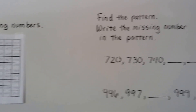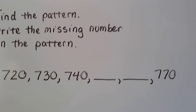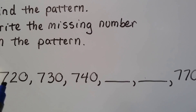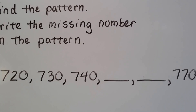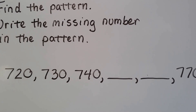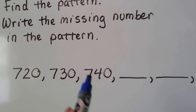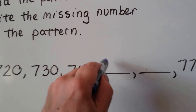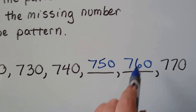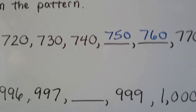Now these are going to be a little different — let's find the pattern and write the missing numbers. Can you tell what the missing numbers are? The hundreds are all staying the same: 700, 700, 700, 700. The ones place is 0 each time. So the tens place is changing: 720, 730, 740. If you said 750, you're right, and this would be 760. The tens are going up by one, so it's increasing by 10 — that's the pattern.